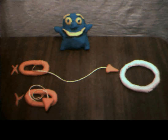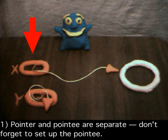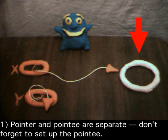Number one, the basic structure is that you have a pointer, and it points over to a pointee. But the pointer and pointee are separate, and the common error is to set up a pointer but to forget to give it a pointee.